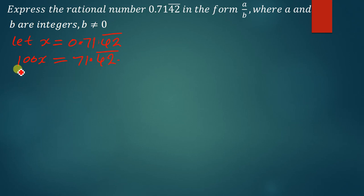It's just the same as multiplying this equation again by 100. So if we multiply this by 100 we're going to have 10,000x is equal to 7142.42 bar.